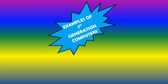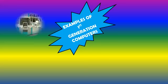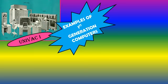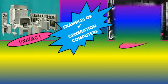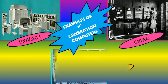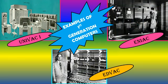Here are some examples of first generation computers: UNIVAC 1, ENIAC, and EDVAC. You can see the size of these computers — they are too big, of the size of a room. This is because of the use of vacuum tubes, as the size of vacuum tubes is very big and so the computer is also very big in size.